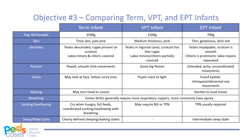Extremely preterm infants often have thin, gelatinous skin and appear dark red all over their body. In males, their testes are impalpable and their scrotum is smooth. In females, the clitoris is prominent and labia majora are widely separated. Their movements are often extended, jerky, and uncoordinated. Extremely preterm infants may have fused or only partially open eyelids and often startle to loud noises. They often require respiratory support and usually require TPN. They do not have a defined sleep cycle and are often in an intermediate sleep state.